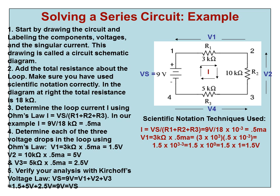V2 is 10 kilo ohms times 0.5 milliamps. That's 5 volts. And V3 is 5 kilo ohms times the same half milliamp, which is 2.5 volts. And then verify your analysis with Kirchhoff's voltage law.